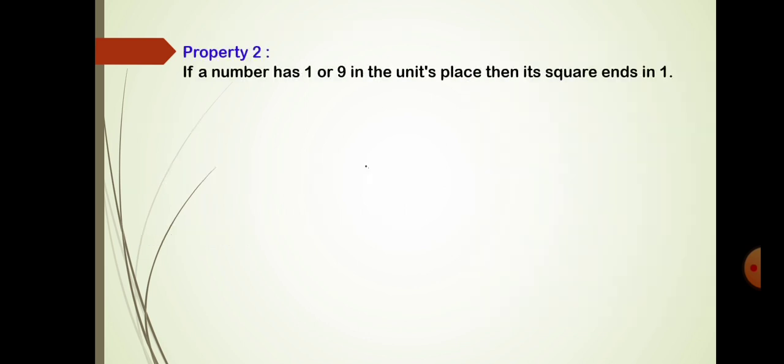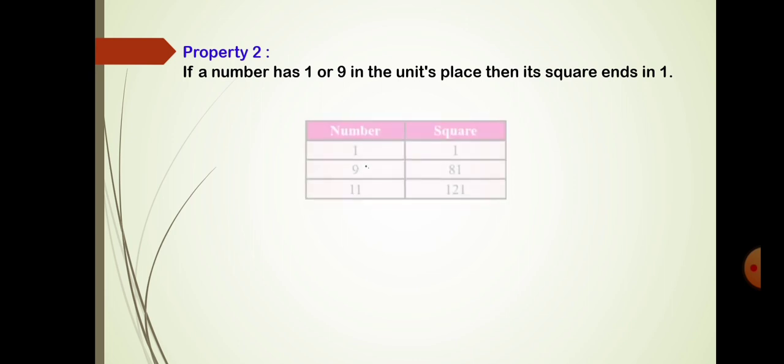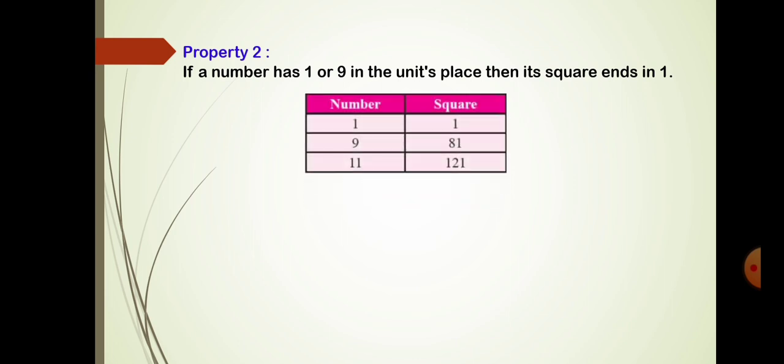Property number 2: If a number has 9 or 1 at the unit place, then its square ends in 1. For example: 1 squared is 1, 9 squared is 81, and 11 squared is 121. So any number whose ones place is 1 or 9, when squared, will give an answer ending with the digit 1 at the unit place.